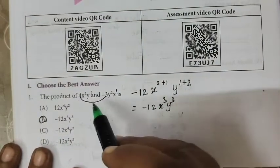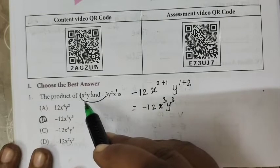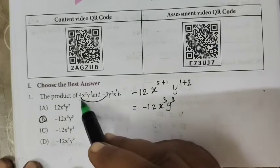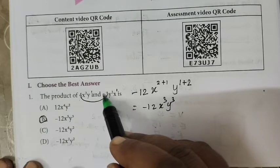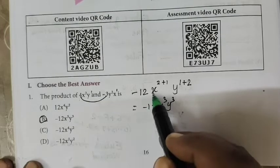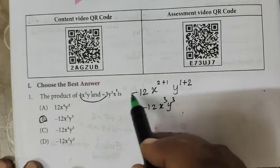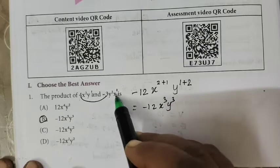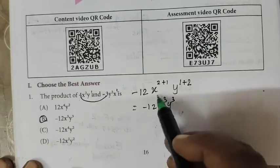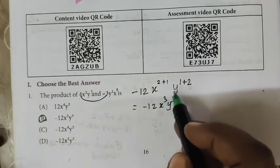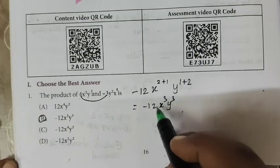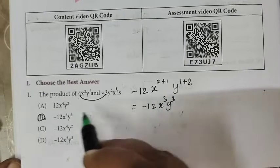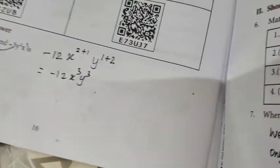Choose the best answer. The product of this — multiply here. 4 times 3 is 12. The minus sign stays minus. The power is 2 and 1, so 2 plus 1 is 3. You are adding the powers of x and y. So the answer is minus 12x³y³. Option B.